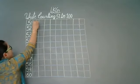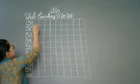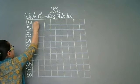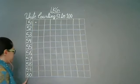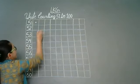Ab hum one box blank chodhenge. Yaha pei dot laga doge. Aur yaha pei kya likha aega? 6, 1. Okay.